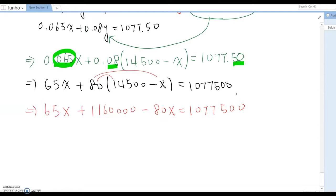And then combine right term. So 65X minus 80X, then this becomes negative 15X plus 1,160,000 equal to 1077,500. We want to isolate X term.